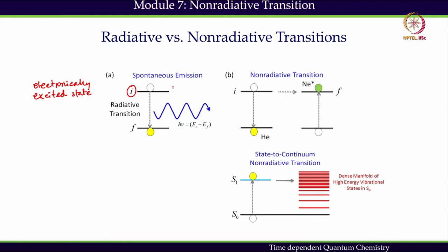If the energy of the initial state is E_I and the final state energy is E_F, then the system can emit one photon and relax back to the lower energy state. This kind of transition, because it is associated with photon emission, is called a radiative transition. Spontaneous emission is an example of radiative transition. An excited quantum system can also spontaneously undergo a non-radiative transition, which, as the name suggests, is not associated with any emission of a photon.